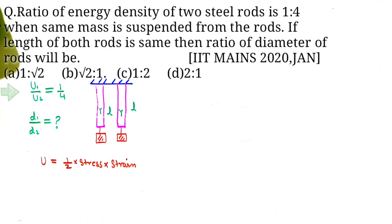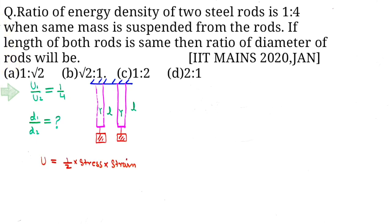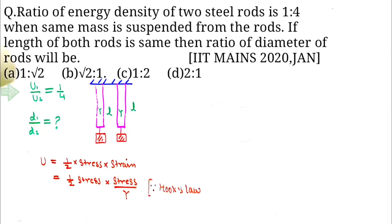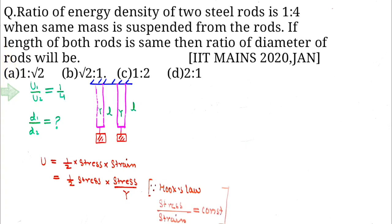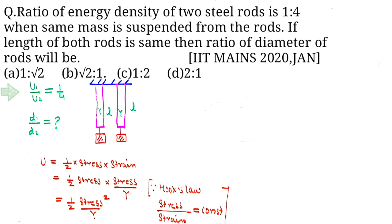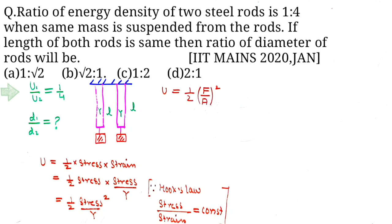Energy density is half into stress into strain, that is half into stress into stress by Young's modulus, because from Hooke's law, stress by strain equals a constant. So finally you get energy density equals half into stress squared by Young's modulus.